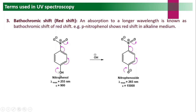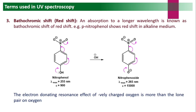Since the electron-donating resonance effect of the negatively charged oxygen is greater than that of neutral OH, the resonance is stronger and absorption shifts to a longer wavelength — from 255 nm to 265 nm. This shifting of absorption towards a longer wavelength is called bathochromic shift or red shift.